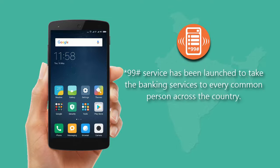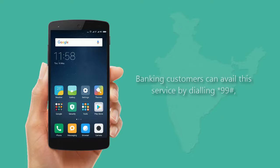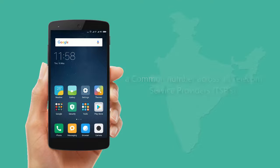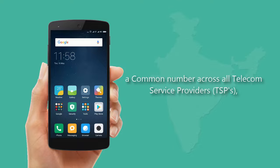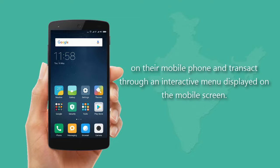The *99# service has been launched to take banking services to every common person across the country. Banking customers can avail this service by dialing *99#, a common number across all telecom service providers (TSPs), on their mobile phone and transact through an interactive menu displayed on the mobile screen.